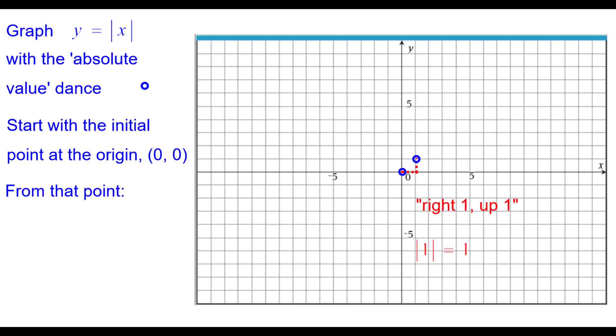And from that point, we'll go right 1 up 1 because the absolute value of 1 is 1. Right 2 up 2, absolute value of 2 is 2. And right 3 up 3, absolute value of 3 is 3.